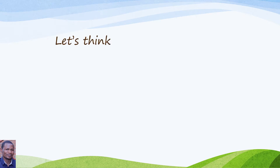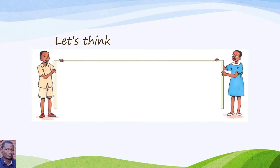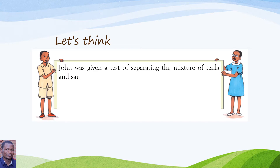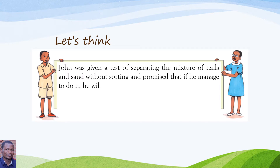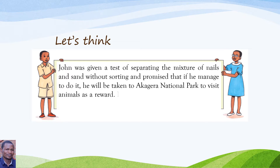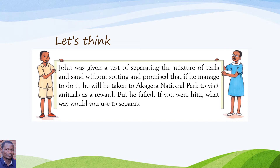Let's think together. John was given a test of separating a mixture of nails and sand without sorting, and was promised that if he managed to do it, he would be taken to Kajera National Park to visit animals as a reward. If you were him, what way would you use to separate nails from sand? What method would you use to separate nails from sand without sorting?